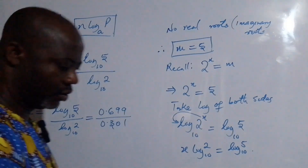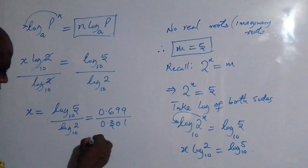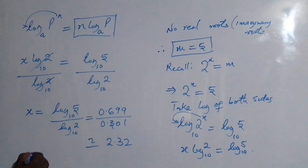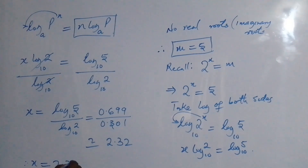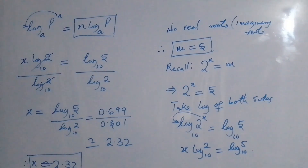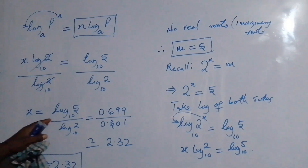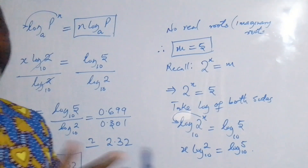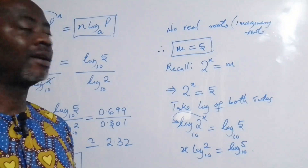Dividing these, we get approximately 2.32 as our result. Therefore, x is approximately equal to 2.32. The solution to the problem is x equal to 2.32, which arose from the fact that m equals 5. The other values of x are imaginary, meaning they do not have real roots.